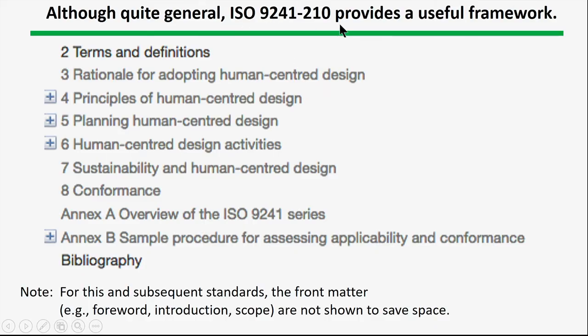Here's a partial table of contents for 9241-210. Pretty much every document starts out with terms and definitions. This one has the rationale in the middle, which is rather unusual — often the rationale is part of the front matter. Then there are principles, planning for design, and other topics, along with appendices including an overview of the 9241 series. Note that I've omitted the front matter — the foreword, introduction, scope, and so forth — because they're pretty much always there and would just take up screen space.